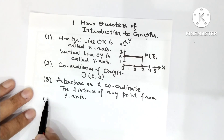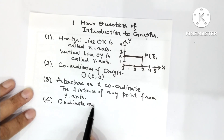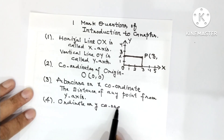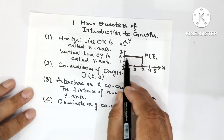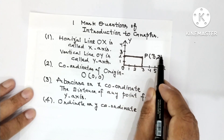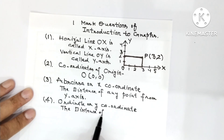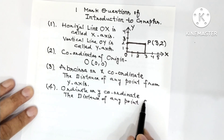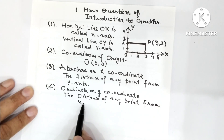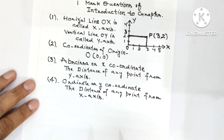Now the next thing is: what is ordinate or Y-coordinate? The distance of any point from the X-axis — here you can see from the X-axis the distance of this point is 1 and 2, so I will write 2. The distance of any point from the X-axis is called ordinate or Y-coordinate.